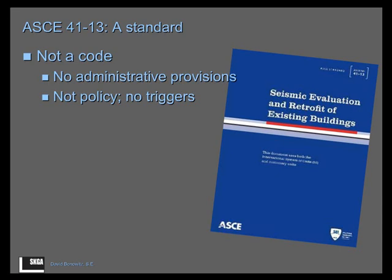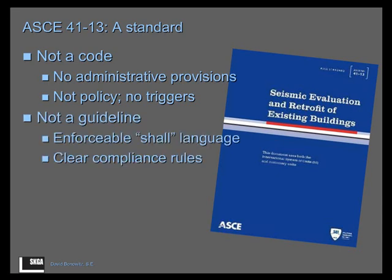The reason that policy is in there is because this document has a long history where it used to be the standalone thing — really the only document to cover existing buildings. In concept, the standard is different from a code because it doesn't have those things. As a standard, it's also more than a guideline. Those previous FEMA documents were understood as guidelines, useful to engineers and practitioners. But when you open up a standard like this, it's written in code-like language — always 'shall' and not 'should' — and you have to do certain things to comply. It's very clear about what the rules are.